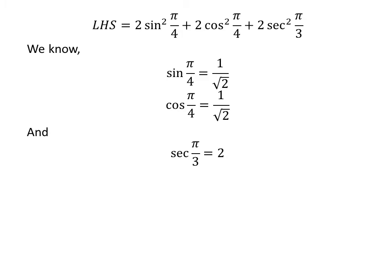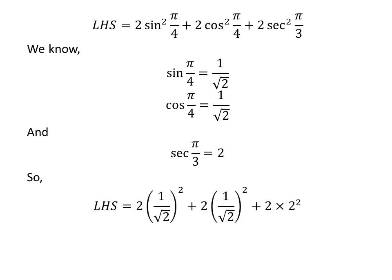We know the value of sine of pi upon 4 is 1 upon square root of 2, the value of cosine of pi upon 4 is 1 upon square root of 2, and the value of secant of pi upon 3 is 2. Plugging these values in gives us 2 times square of 1 upon square root of 2 plus 2 times square of 1 upon square root of 2 plus 2 times square of 2.